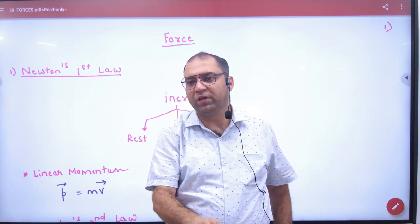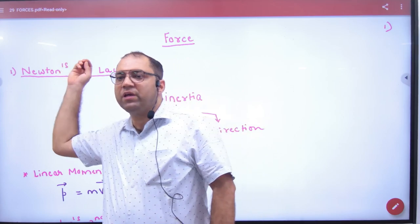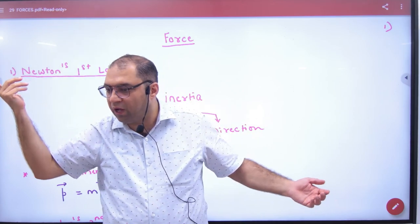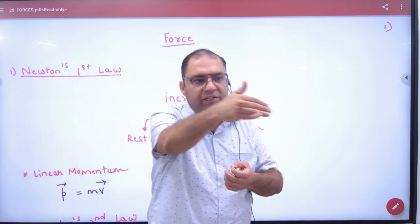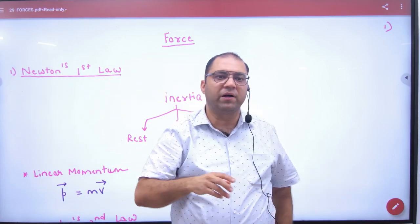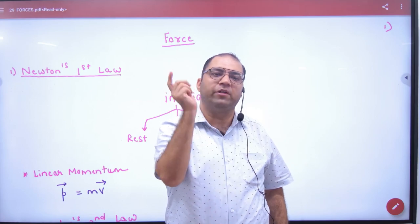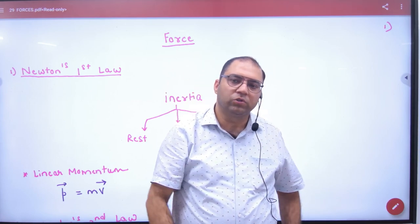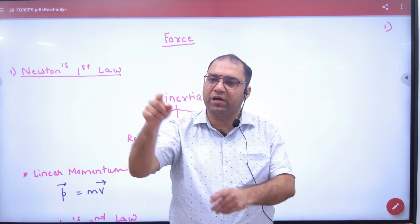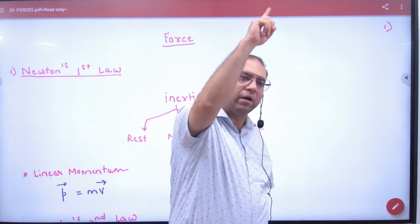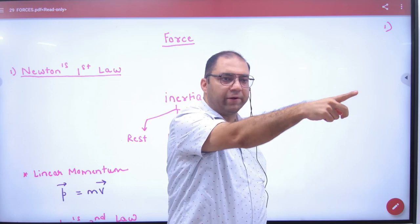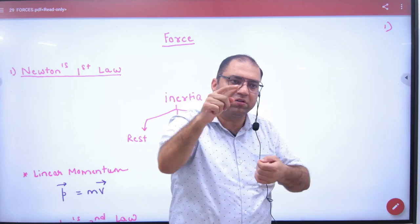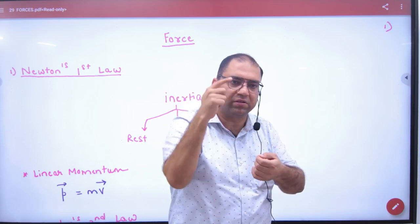Without force, a body will travel in a straight line. If you leave a body in space, it will go straight. If you want to throw a stone in a circle, the string must not break. If the string breaks, the stone will go tangentially — it will go straight. That means, continuously, you are applying force to keep the stone moving in a circle.